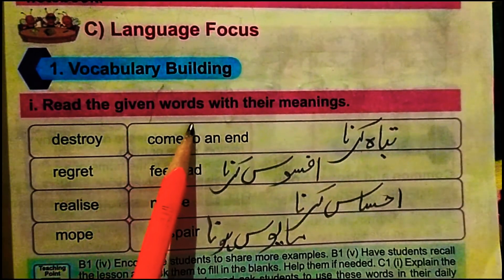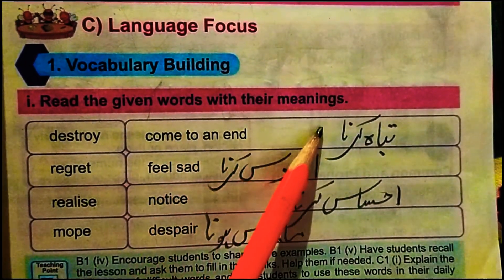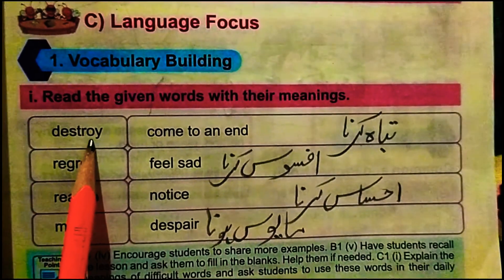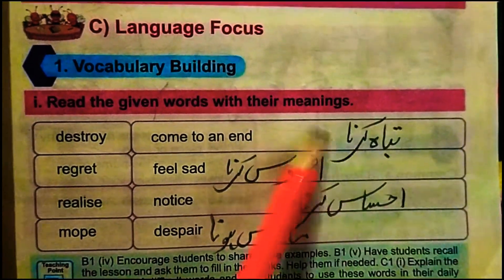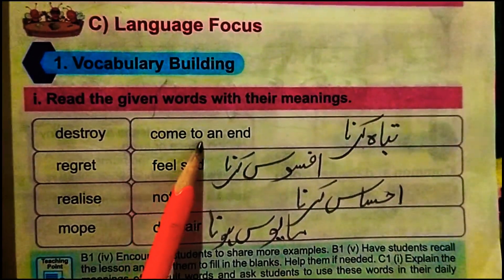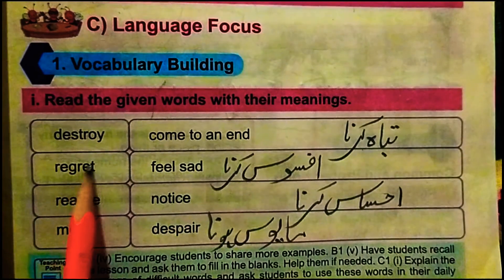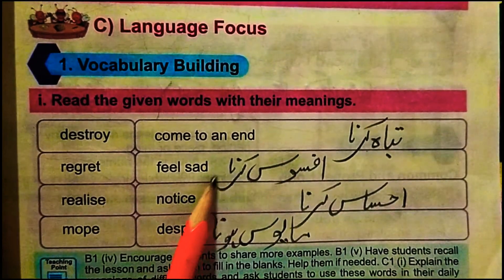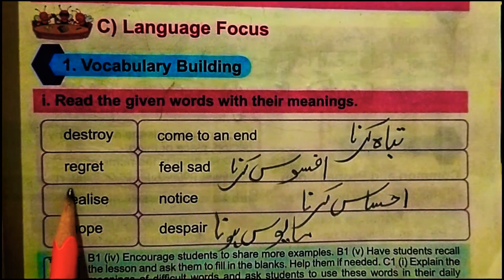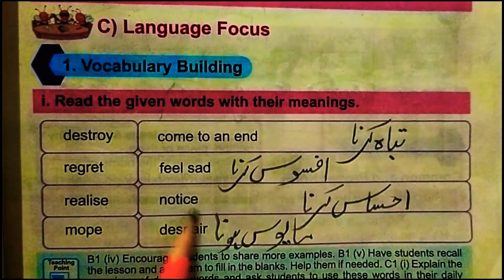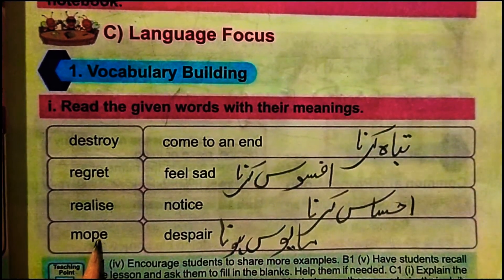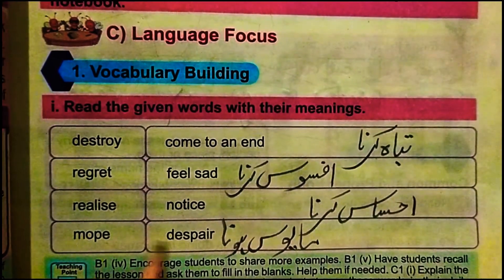Next is vocabulary building — read the given words with their meanings. Destroy means to ruin or taba karna. Come to an end means khatam karna. Regret means feel sad, afsos karna. Realize means notice, asas karna. Mop. Despair means maayus hona.